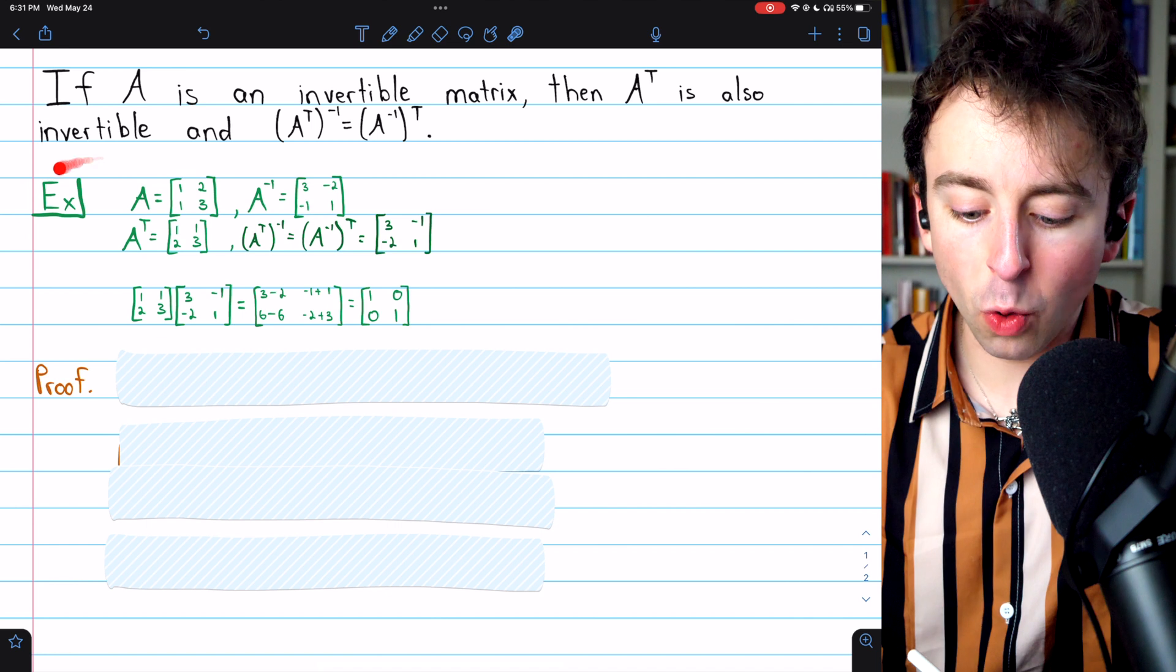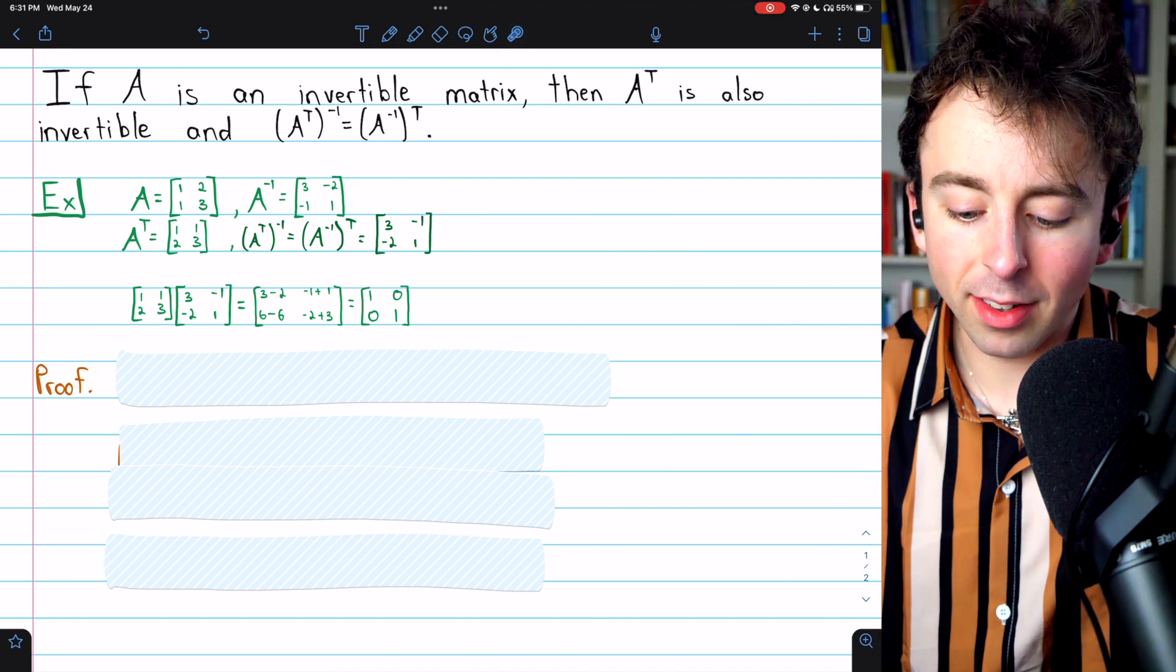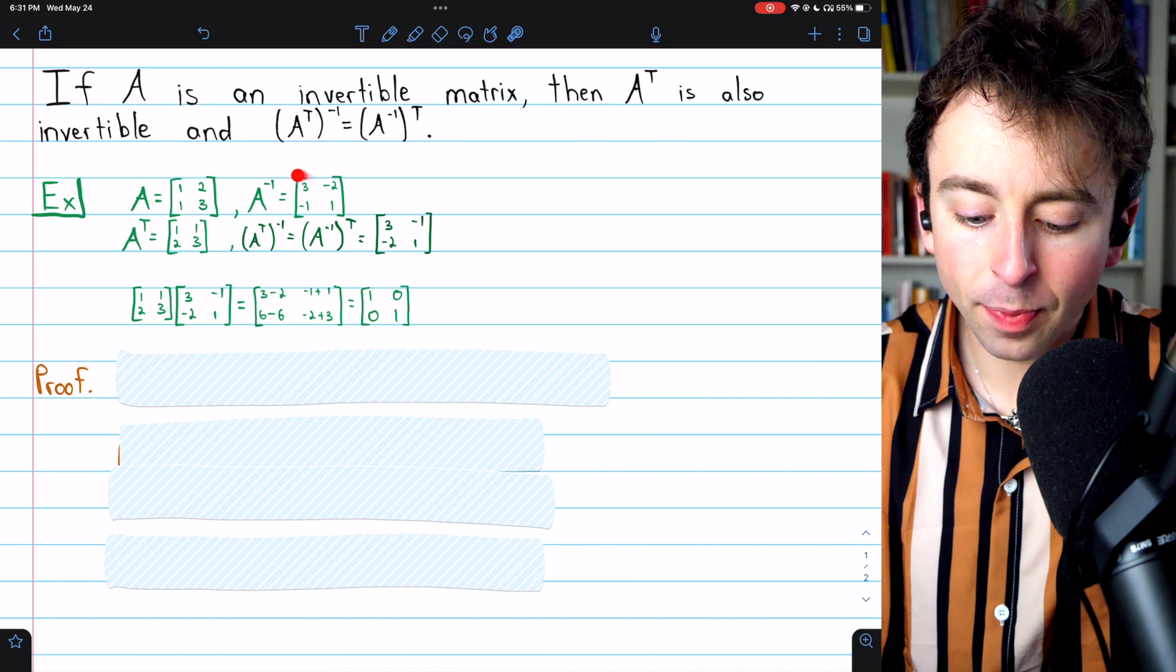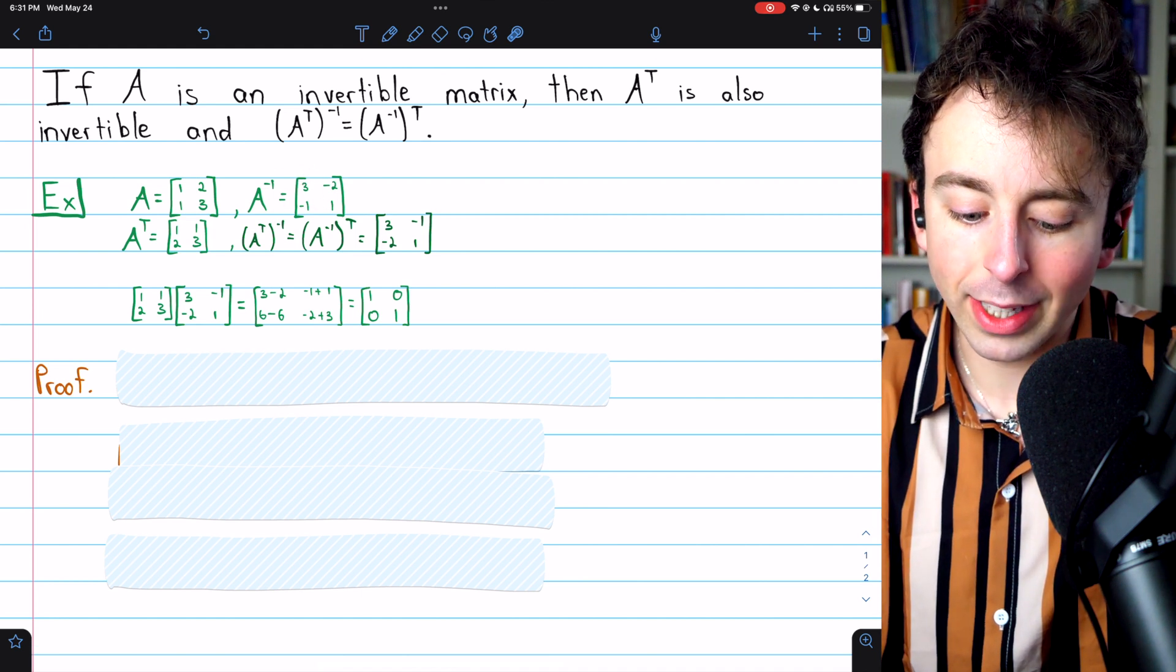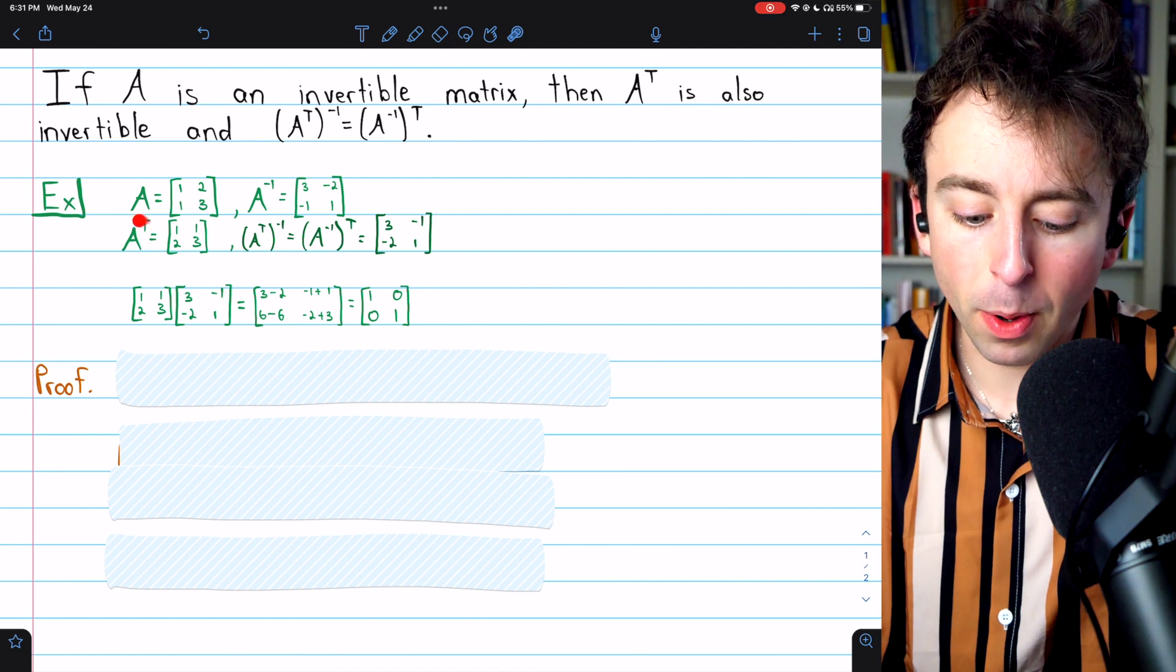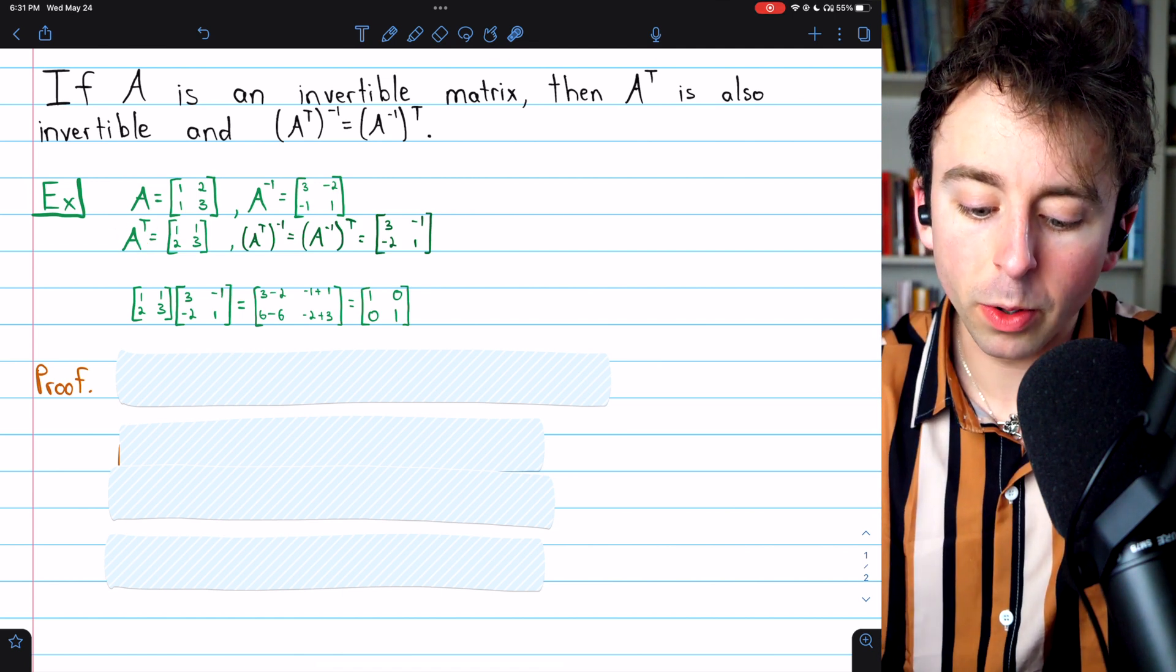It is a really short proof. Here's just a quick example to look at before we go through the proof. Here's a matrix A. Here is its inverse, which you could quickly calculate or verify yourself. Here is the transpose of A by interchanging the rows and columns.